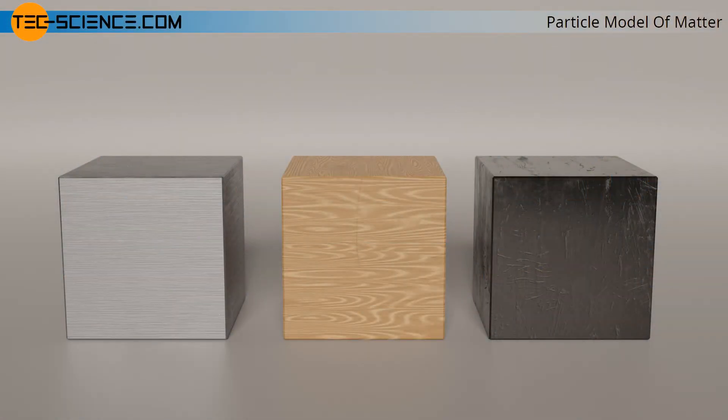All substances like metal, wood, or plastic consist of atoms or whole groups of atoms, which are also called molecules. In general, such atomic units are simply referred to as particles.